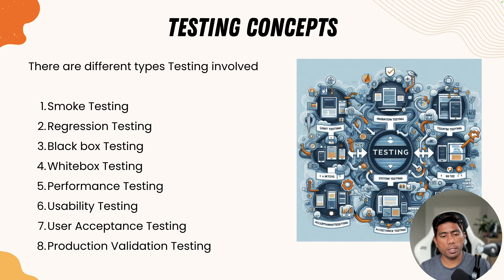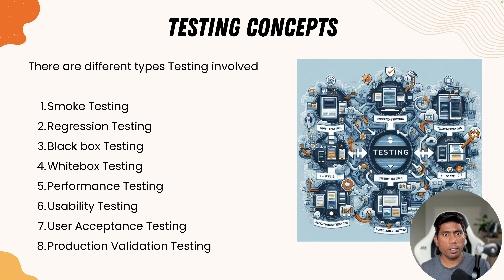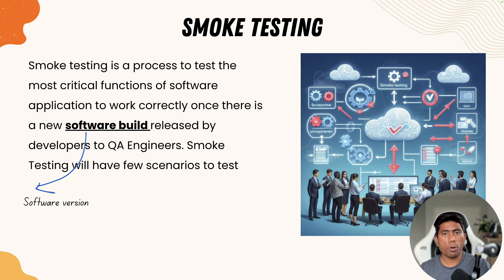There are many different types of testing involved in software testing, including smoke testing, regression testing, black box testing, white box testing, performance testing, usability testing, user acceptance testing, and production validation testing. These are some of the testing types we have during software development. The two that we will be talking about in this lecture are smoke testing and regression testing.